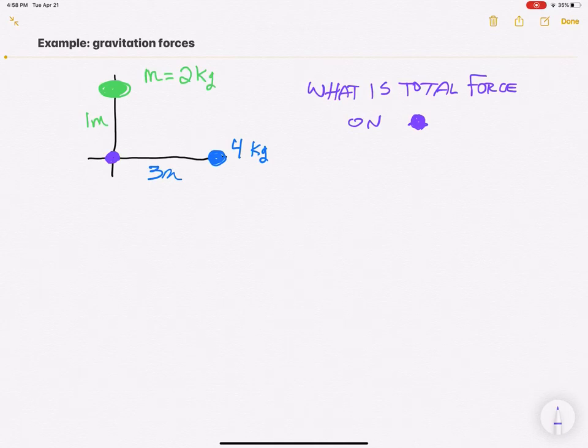So we have to remember what we learned a long time ago that we can sum forces as vectors. And all I want here is the total force, so what I'm looking for then is the force of green on purple plus the force of blue on purple.